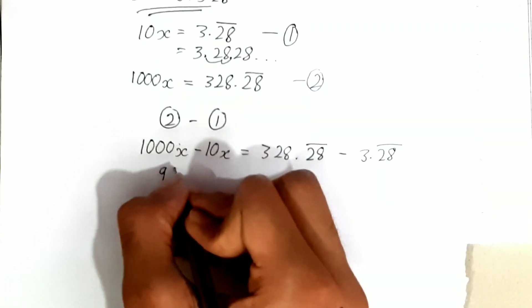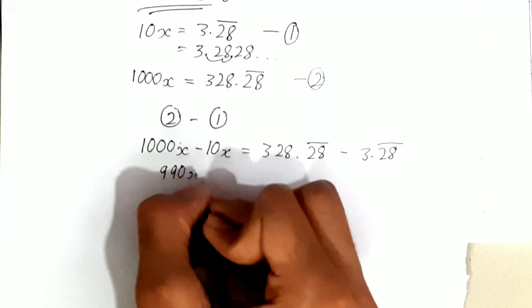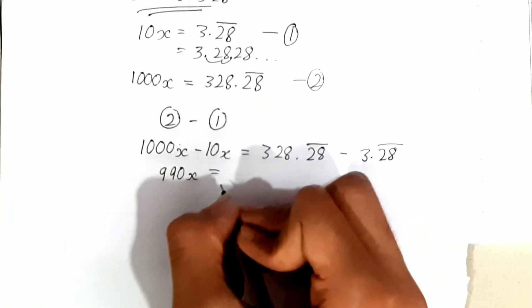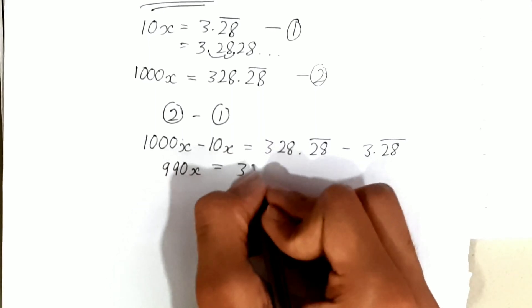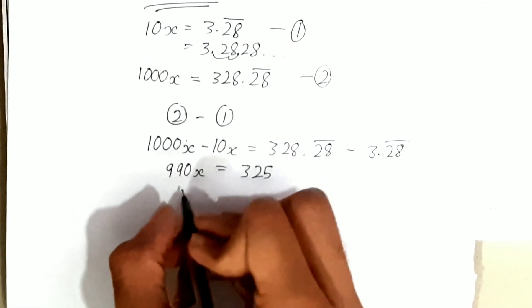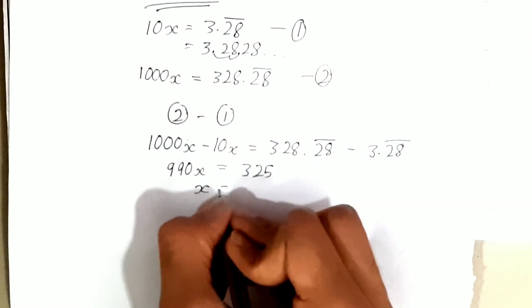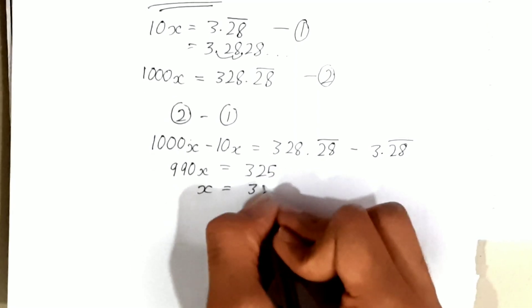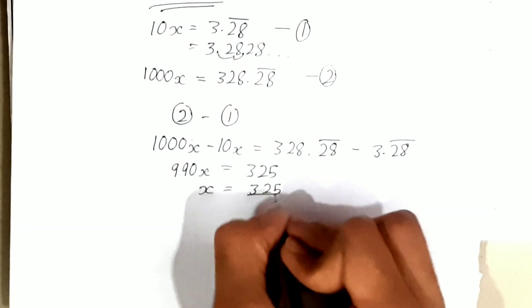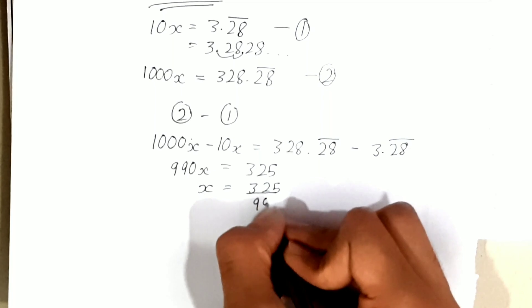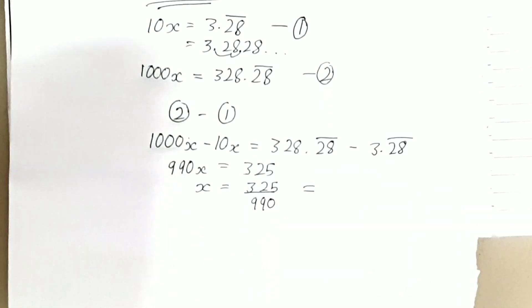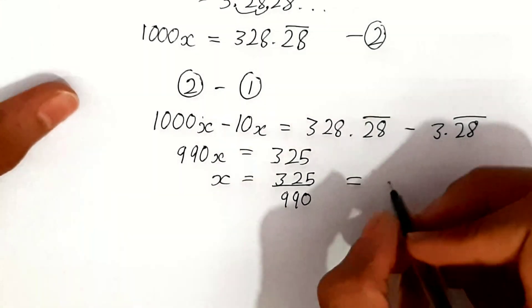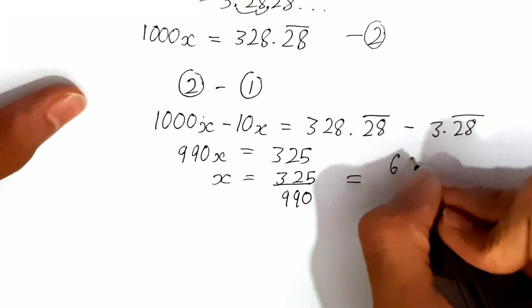This gives us 990x = 325. So x = 325/990. We can simplify 325/990 by dividing both by 5 to get 65/198.